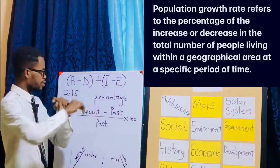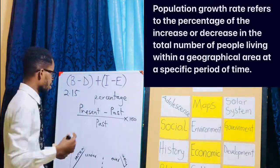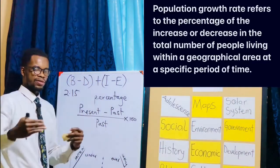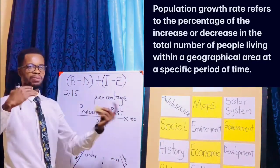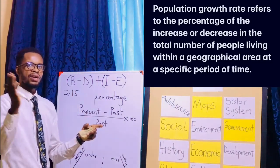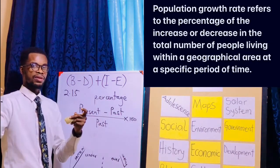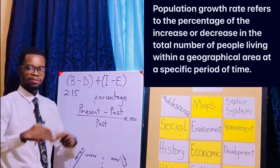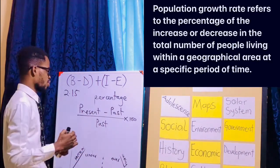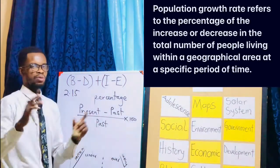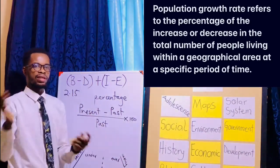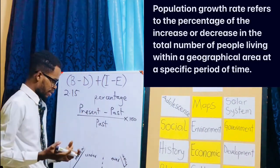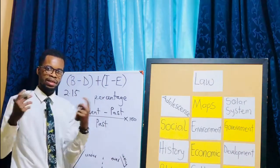Currently Ghana's growth rate is around 2.09 to 2.15% year on year. There was a drop in the rate between 2019 and 2020 because borders were closed and restrictions were in place. However, we had an increase by the close of 2019 because of the Year of Return, when many people in the diaspora came into the country. After that, COVID-19 affected migration and movement of people in and out of the country.